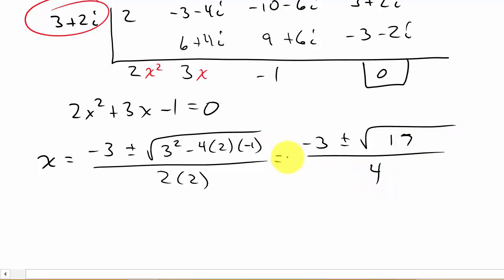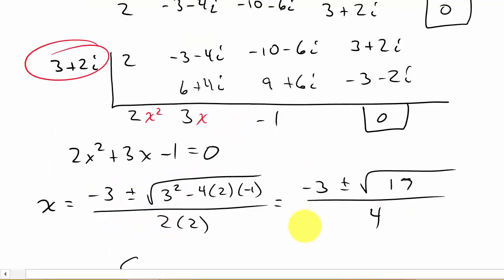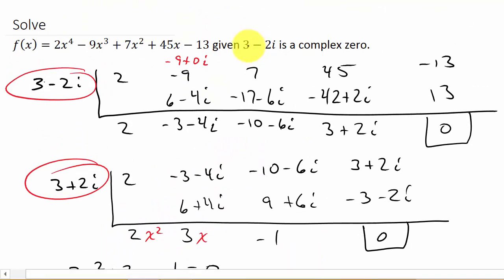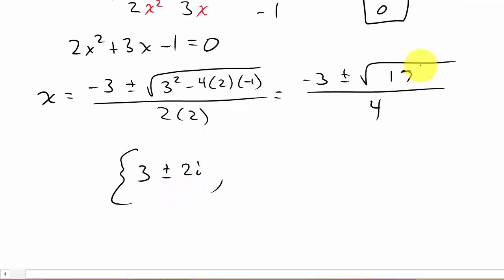So there's your other solutions. So our solution to this problem is, well, the zeros that they gave us, 3 minus 2i and 3 plus 2i. So 3 plus or minus 2i. And then this one, negative 3 plus or minus square root of 17 over 4.